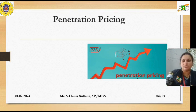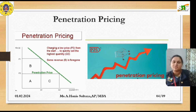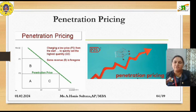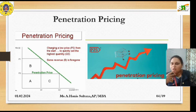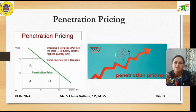This graph shows the gradual increase in price. We have two price points, p1 and p2, and two quantity points, q1 and q2. For both q1 and q2, the price is initially low. P2 is the initial penetration price — very low — and p1 is the next phase of pricing. Charging a lower price p2 from the start allows the seller to quickly sell higher quantities up to q2. The area B denotes some revenues that may be foregone initially.